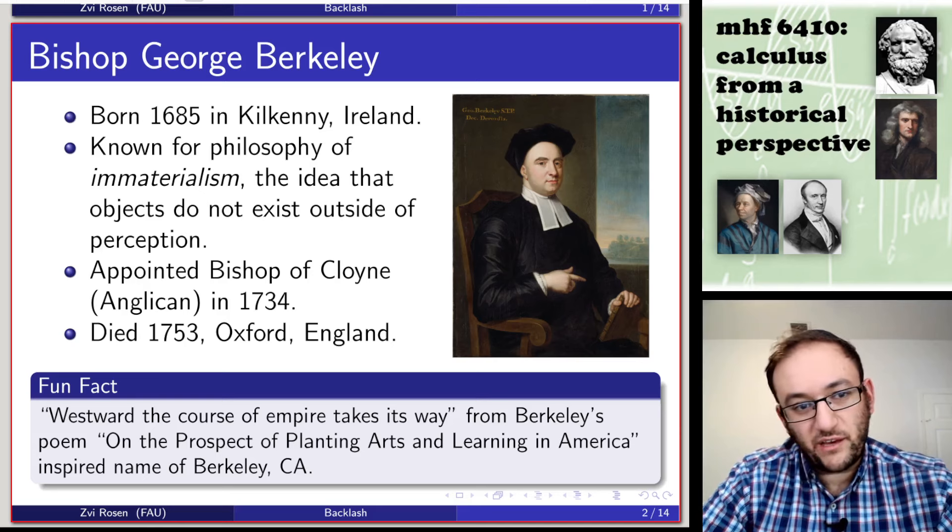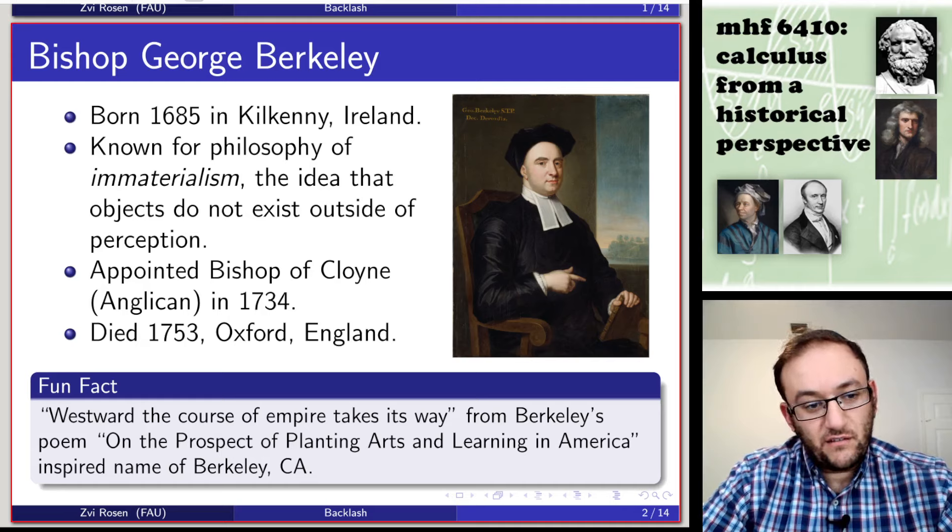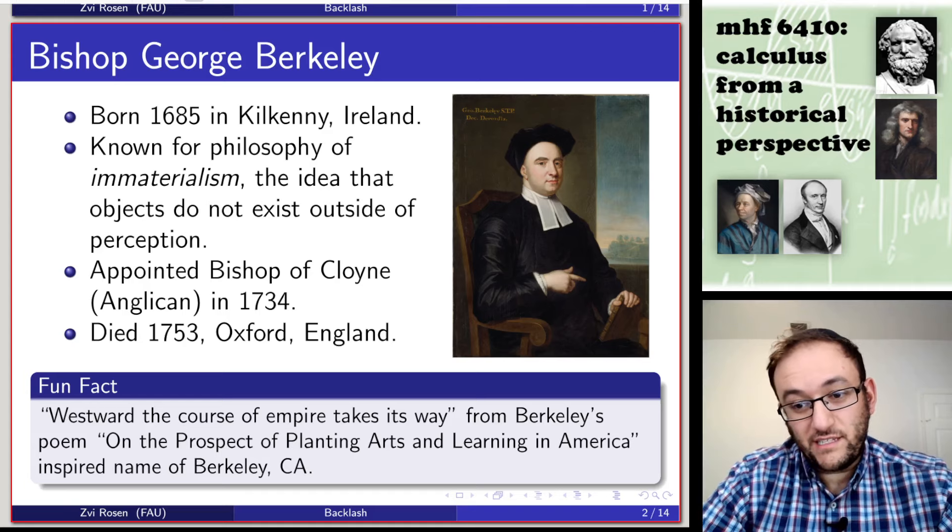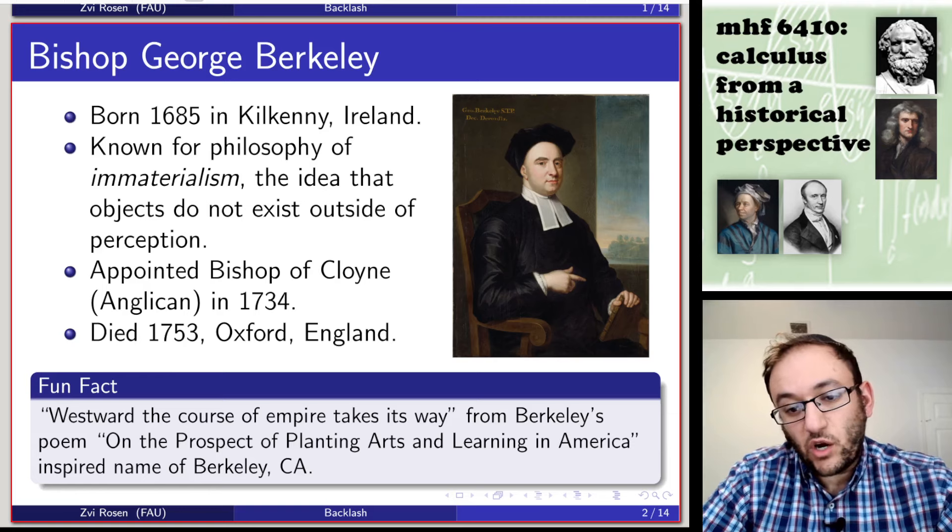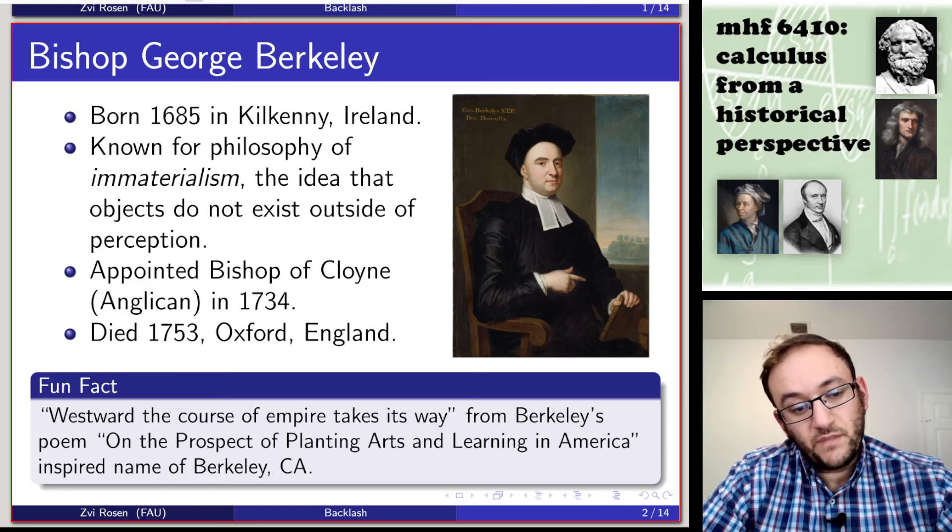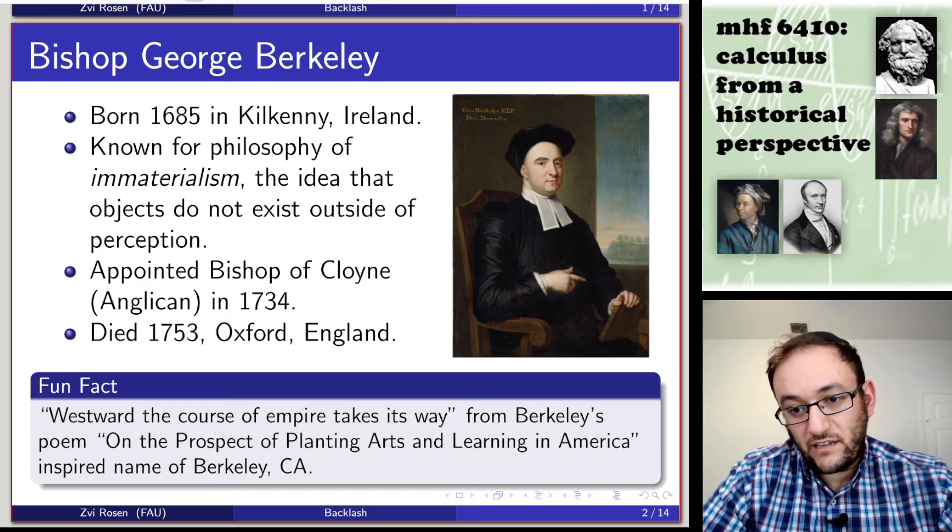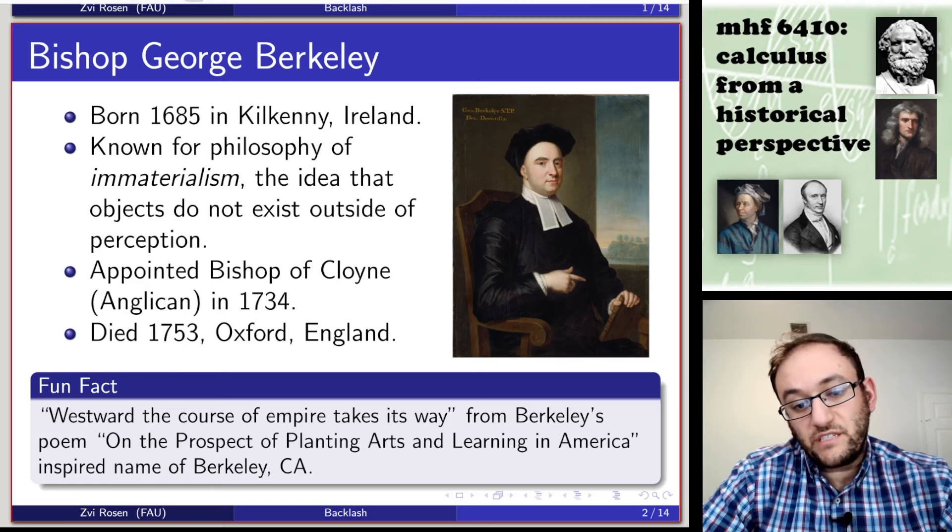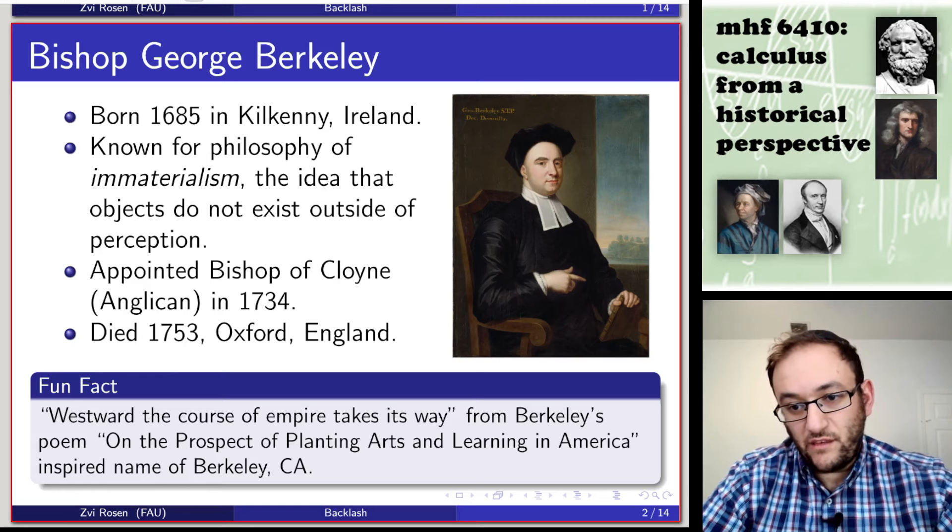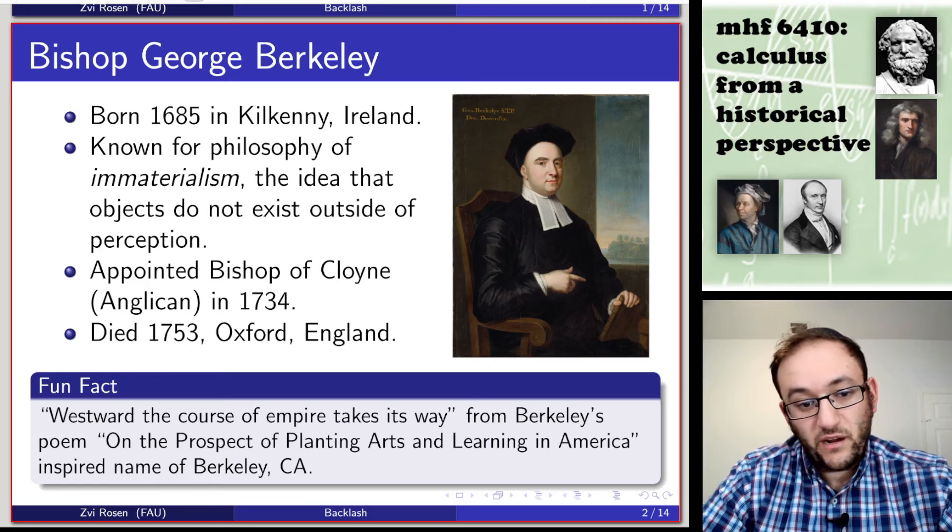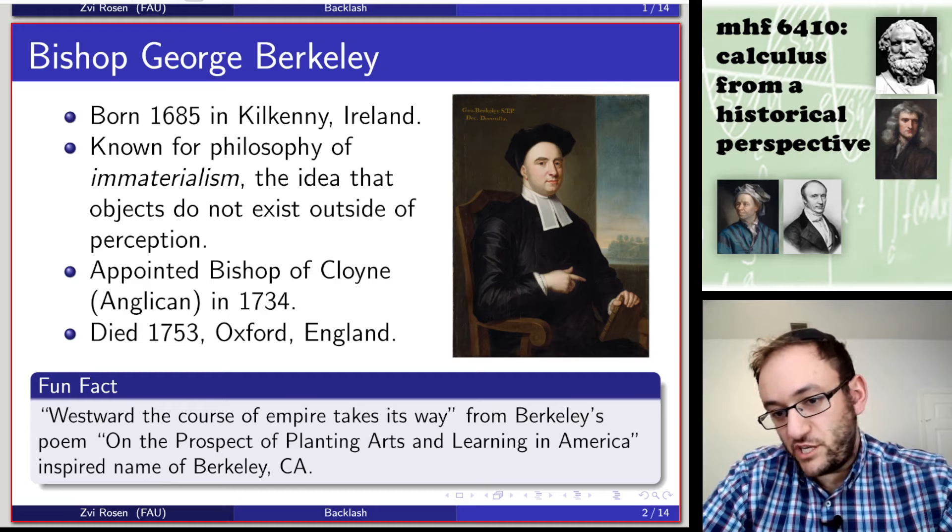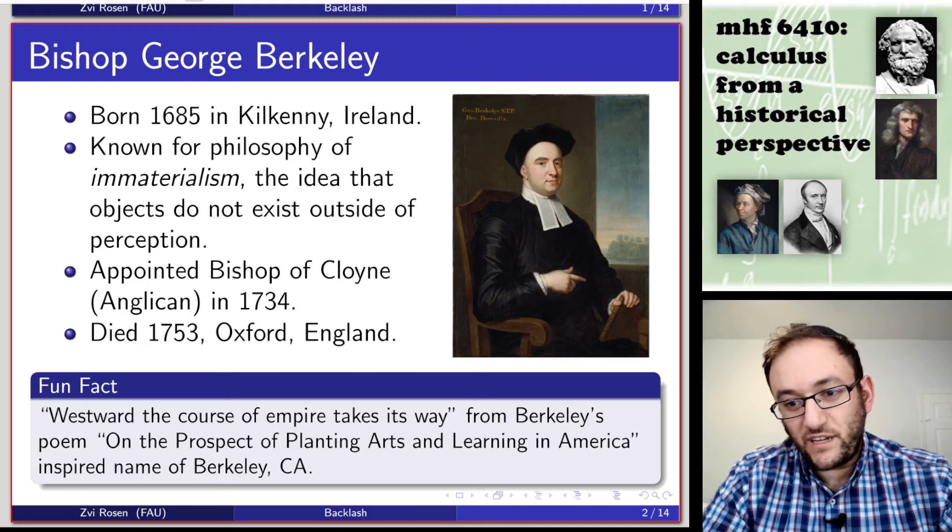One fun fact about Berkeley is that the city of Berkeley, California, where I attended grad school, was actually named after him. The reason being that he wrote this poem called On the Prospect of Planting Arts and Learning in America. And there's a line at the end of the poem: Westward the course of empire takes its way. The founders of Berkeley were inspired by that since they were pioneers in the west of North America. They changed the pronunciation because English is a funny language.